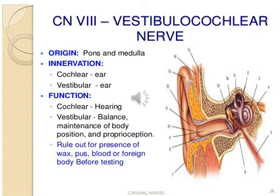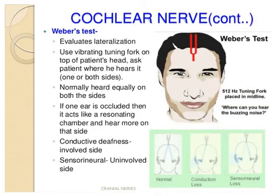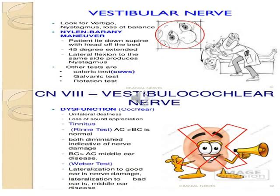The eighth cranial nerve is the vestibulocochlear nerve. It has a cochlear part responsible for hearing and a vestibular part responsible for balance. The cochlear part is examined by the Rinne and Weber tests, comparing bone conduction and air conduction to detect sensorineural hearing loss versus conductive hearing loss. To examine the vestibular part, we look for vertigo, nystagmus, and loss of balance, as illustrated in the pictures.